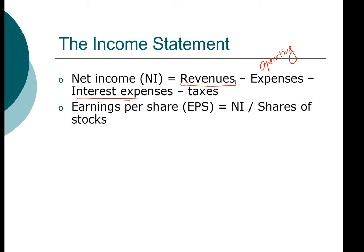For most investors, we don't buy an entire company. So when we are working with financial statements, oftentimes it's useful to look at what is my share of the company worth. The per share concept is very useful. One very common per share statistic that is reported is earnings per share, or EPS. Earnings per share is simply net income divided by the number of shares of stock outstanding. That's my share of net income, and it's called earnings per share.